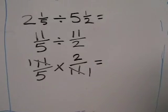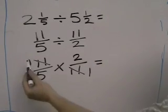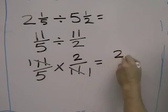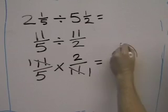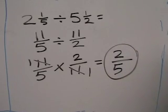And now nothing else can be cross-cancelled, so we multiply. 1 times 2 is 2. 5 times 1 is 5. And the final answer is 2 fifths.